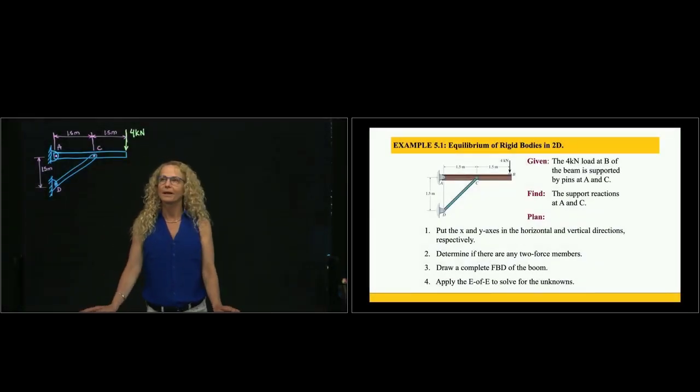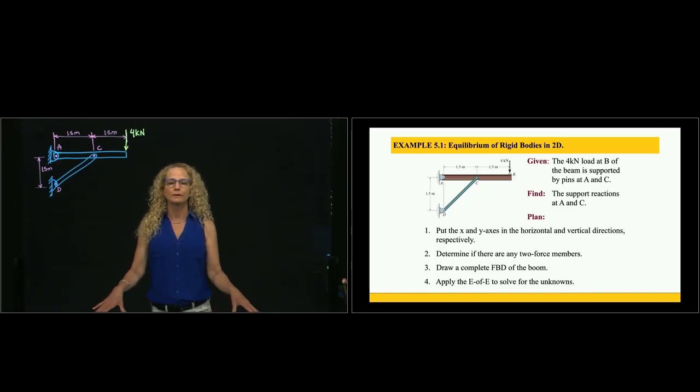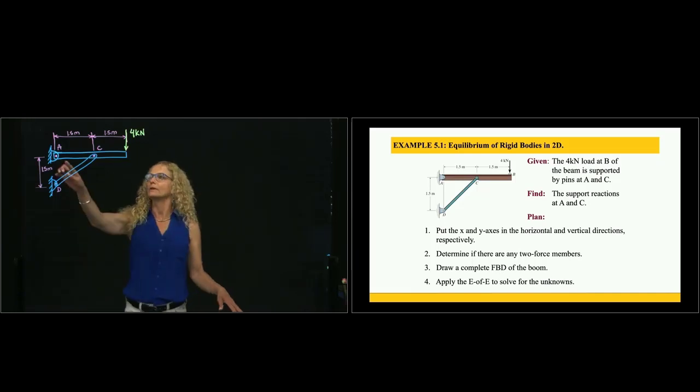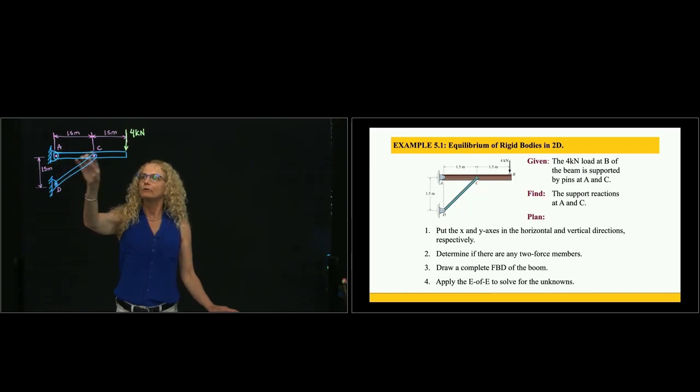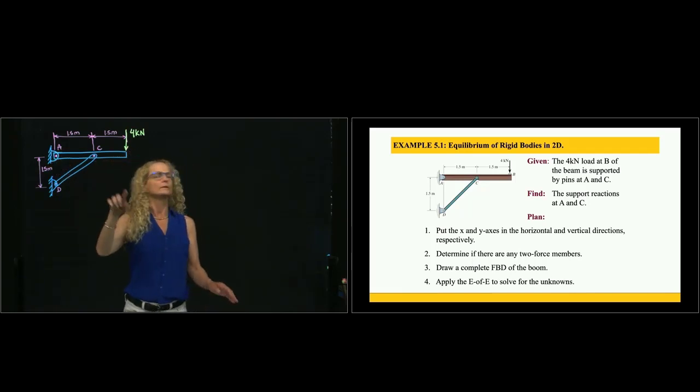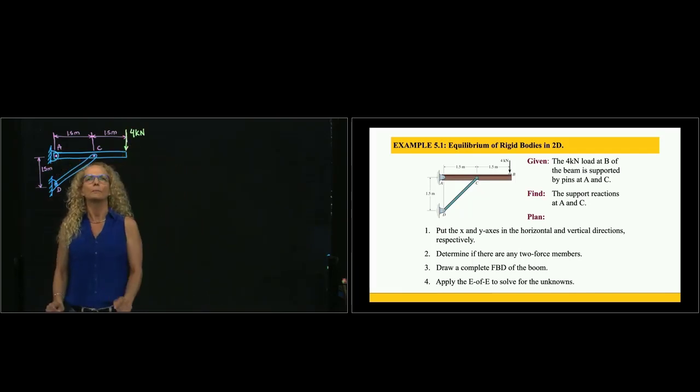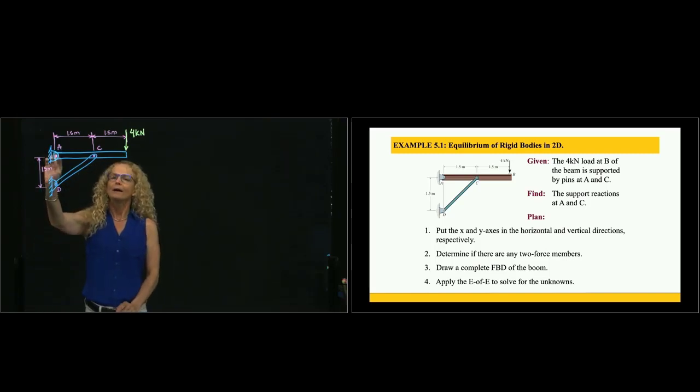Hi. We are working today in chapter number five, which is equilibrium of rigid bodies. This is the first example, and what we like to do is find the support reaction. So we have here a beam from A to this point here where this load is applied, and we have a pin at A, and we have a weightless link CD that is supported by a pin at D.